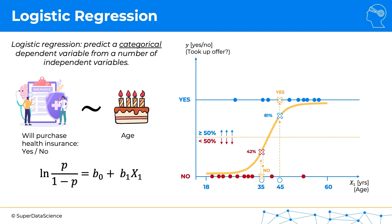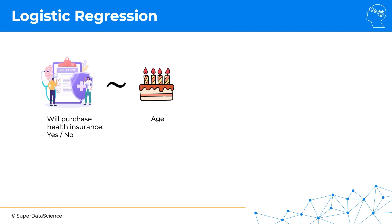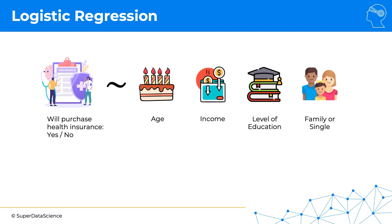Just like with linear regression, you can have multiple independent variables. For instance: age, income, level of education, how big their family is or whether they have a family or they're single, and many other types of variables can be added depending on the use case.